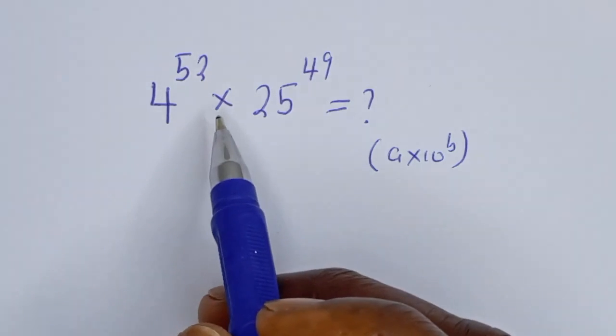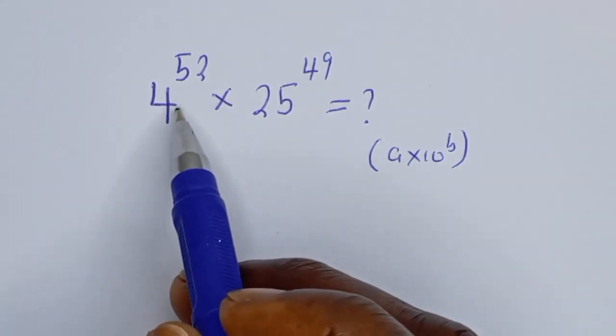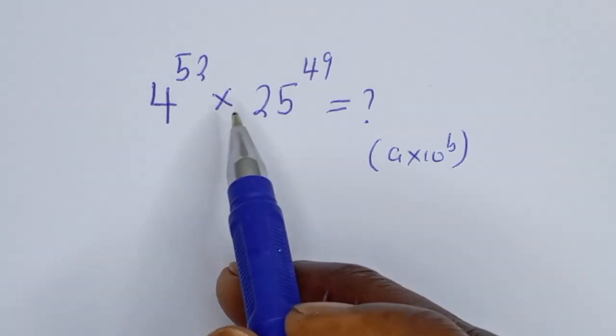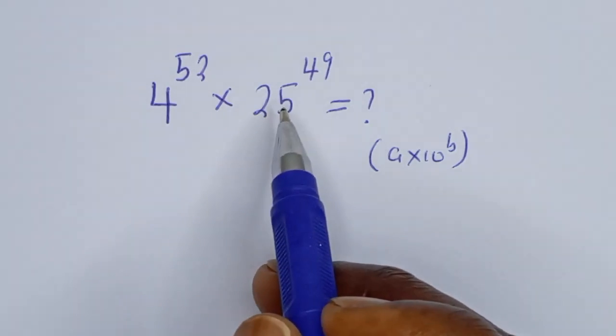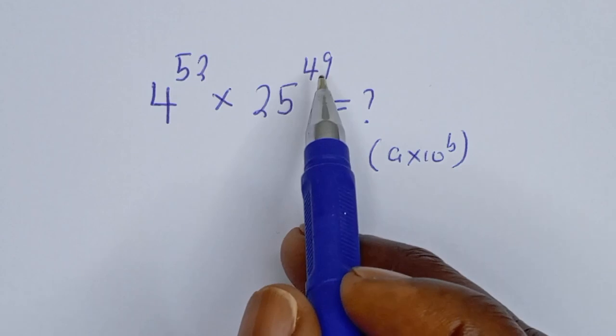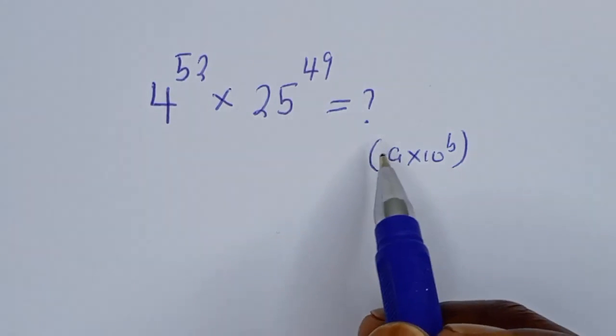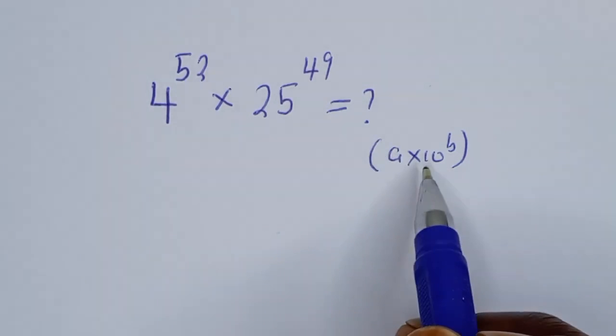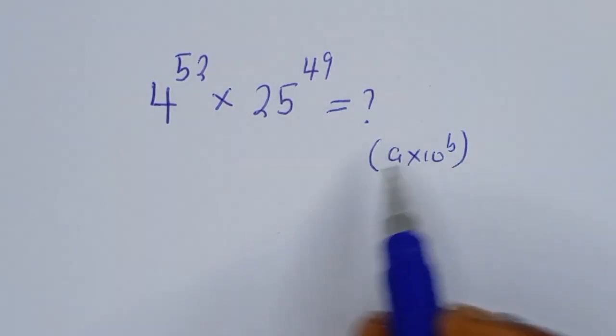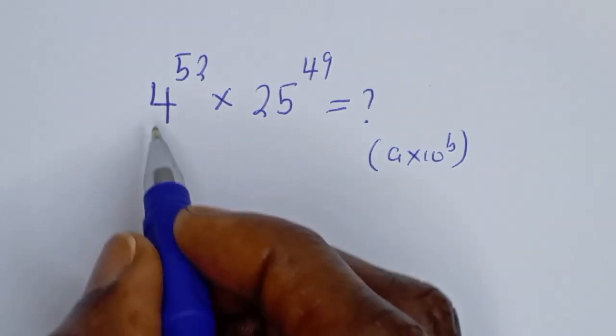Hello, how to simplify this nice math problem? 4 to the power of 52 multiplied by 25 to the power of 49. We are going to write our answer in standard form A multiplied by 10 to the power of B.